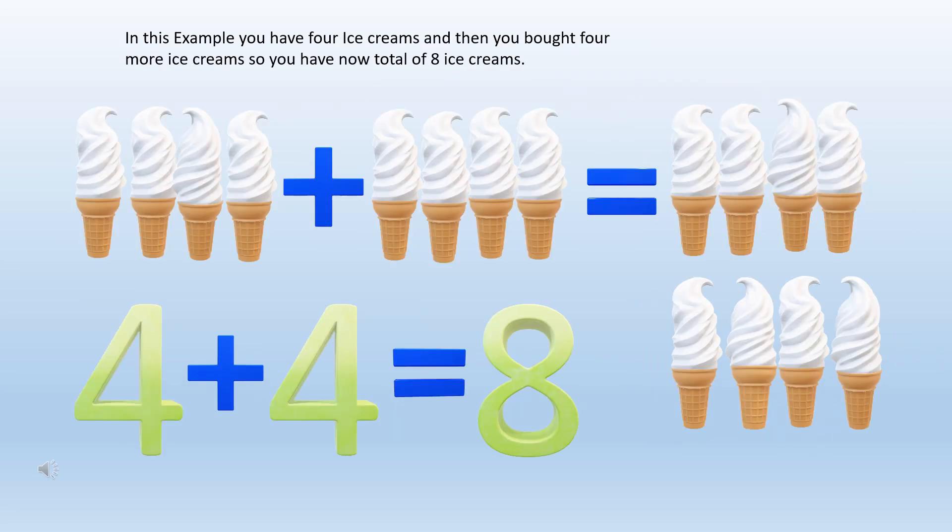In this example you have four ice creams and then you bought four more ice creams so you have now total of eight ice creams.